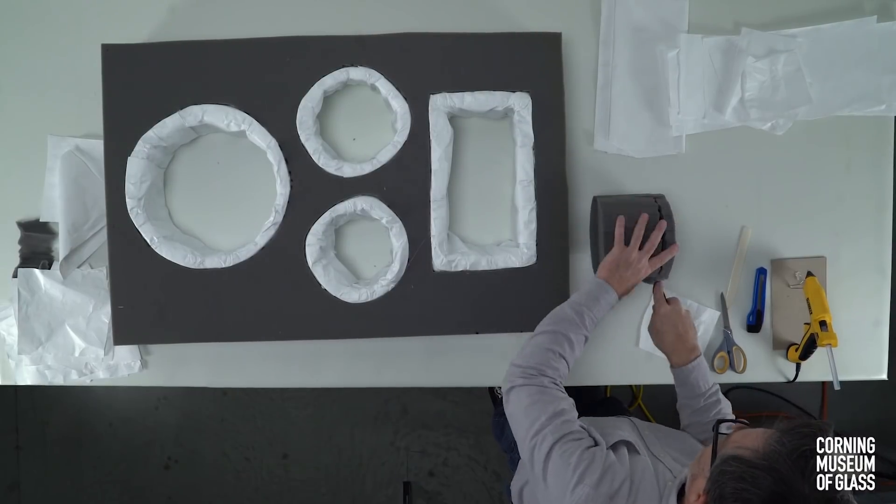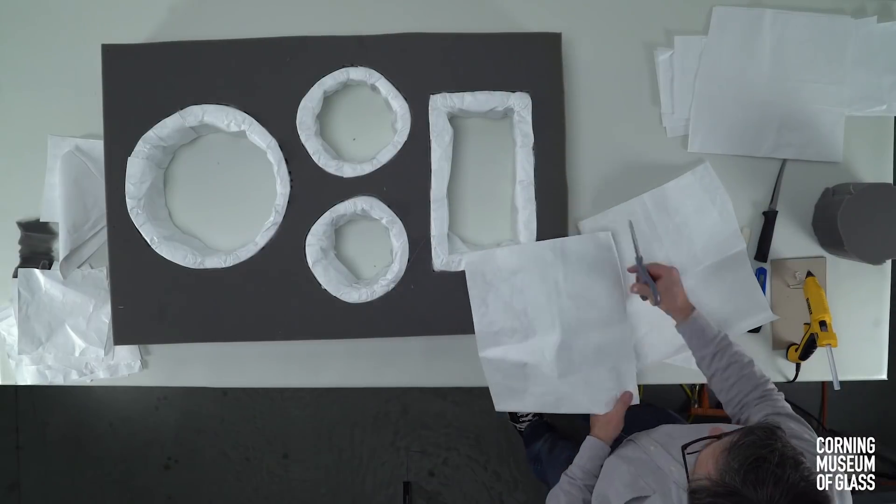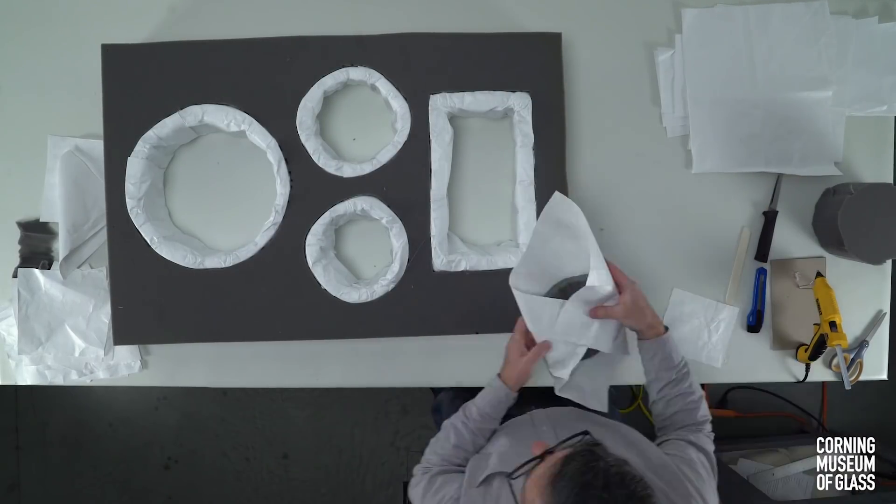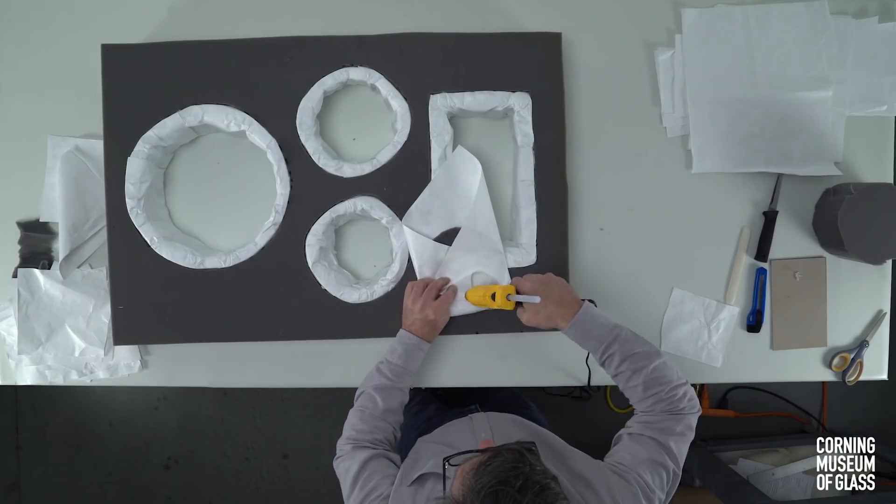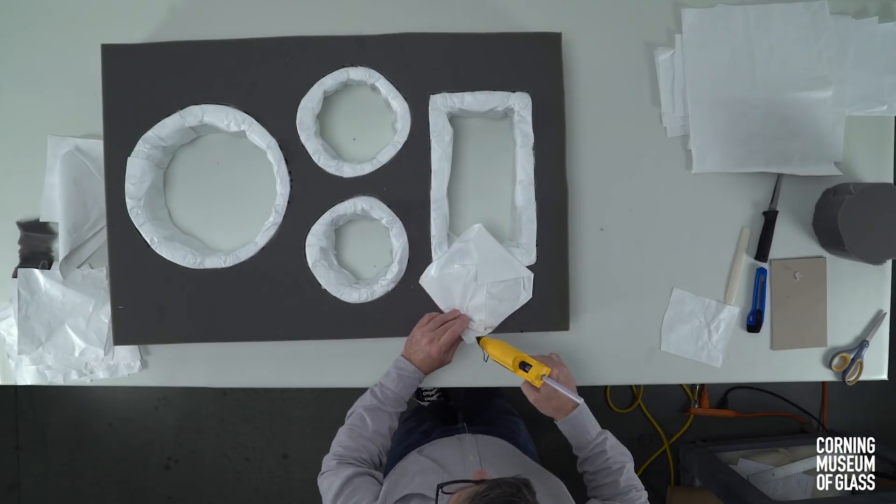It's best to reserve enough space at the top and bottom of each cavity to fit a foam plug, as added security for the object. Return to the foam you've just cut away, and slice off sections. Wrap each in Tyvek or tissue, and fit them with your object into each cavity.